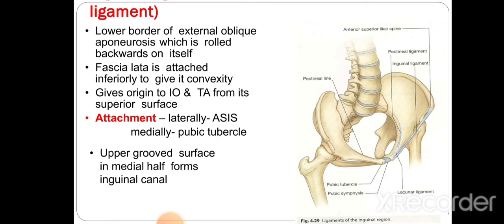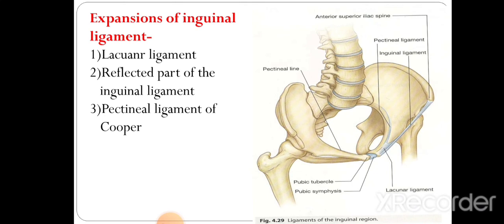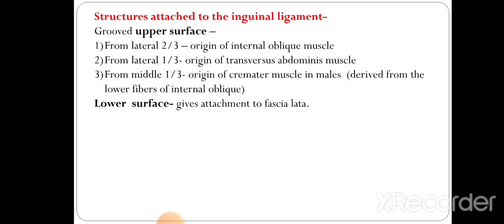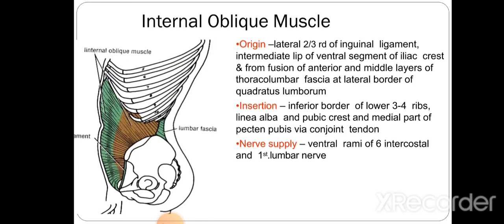The expansions of the inguinal ligament are the lacunar ligament, reflected part of the inguinal ligament, and the pectineal ligament of Cooper. On the upper surface of the inguinal ligament, from the lateral two-thirds there is origin of the internal oblique, from the lateral one-third origin of transversus abdominis, and from the middle one-third origin of the cremaster muscle. The lower surface gives attachment to the fascia lata.